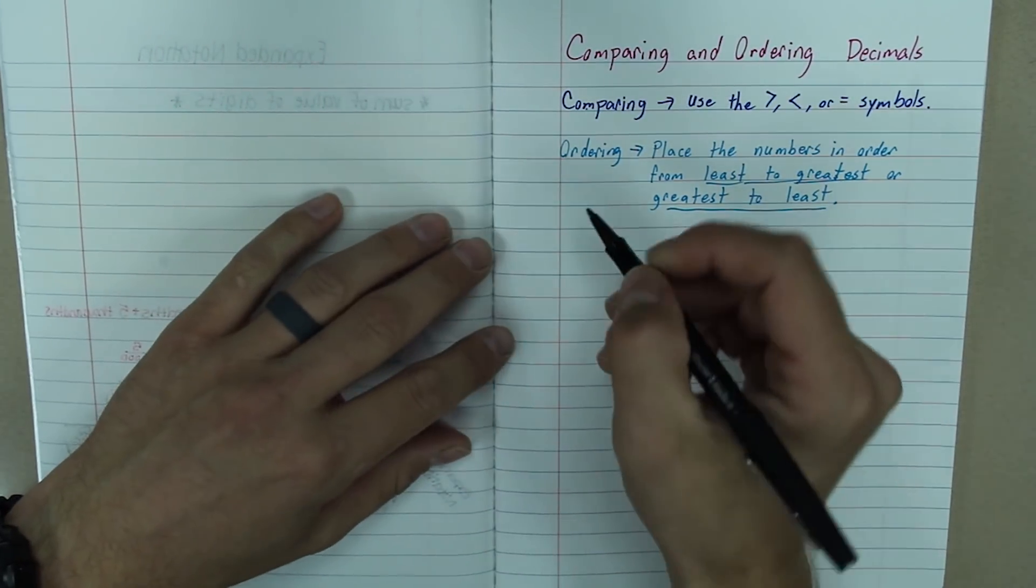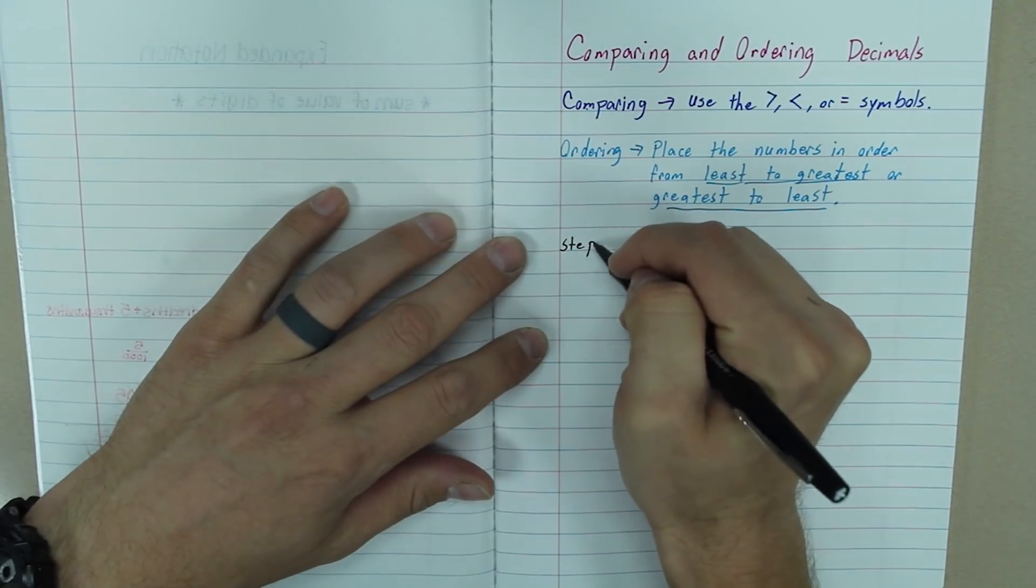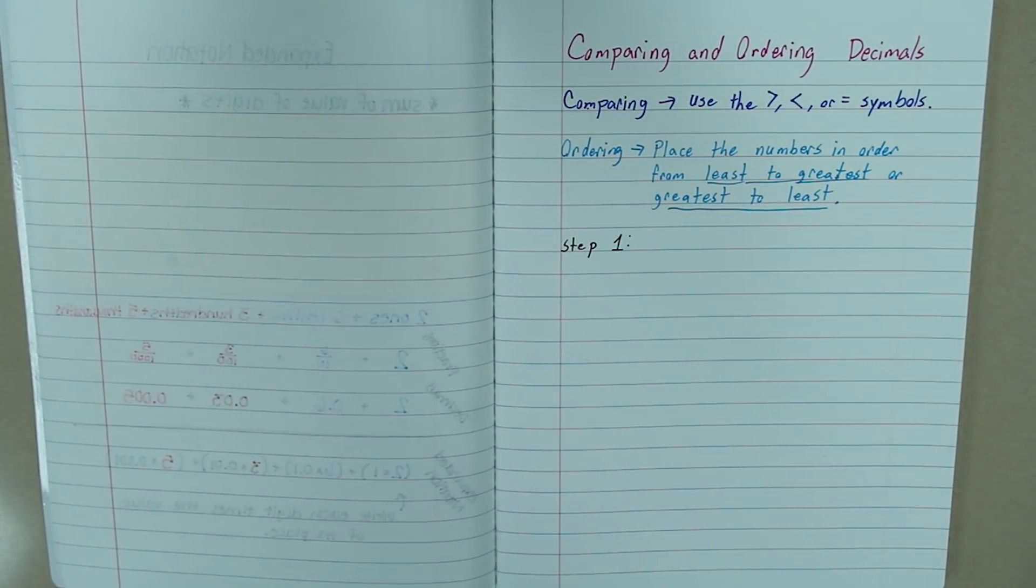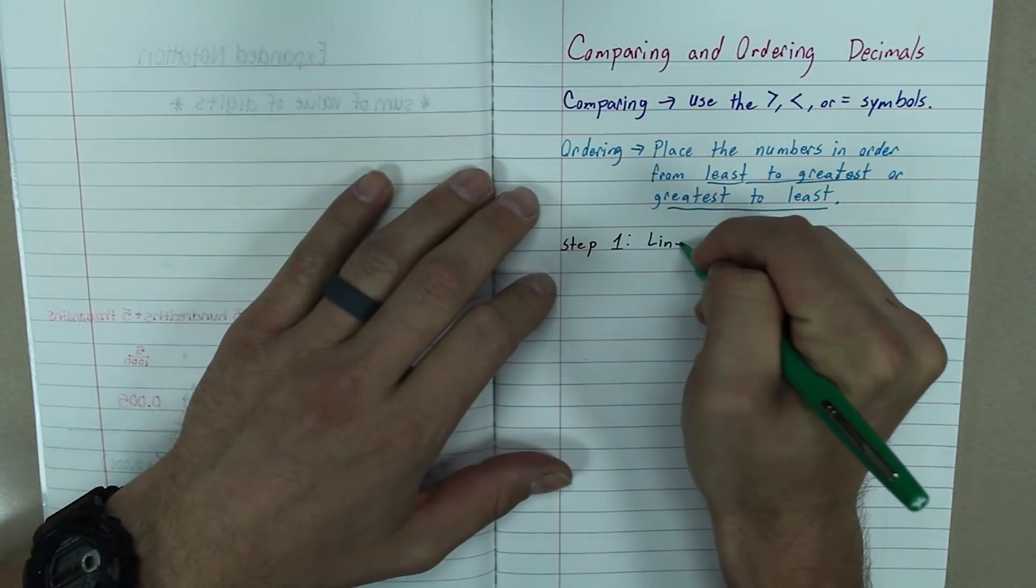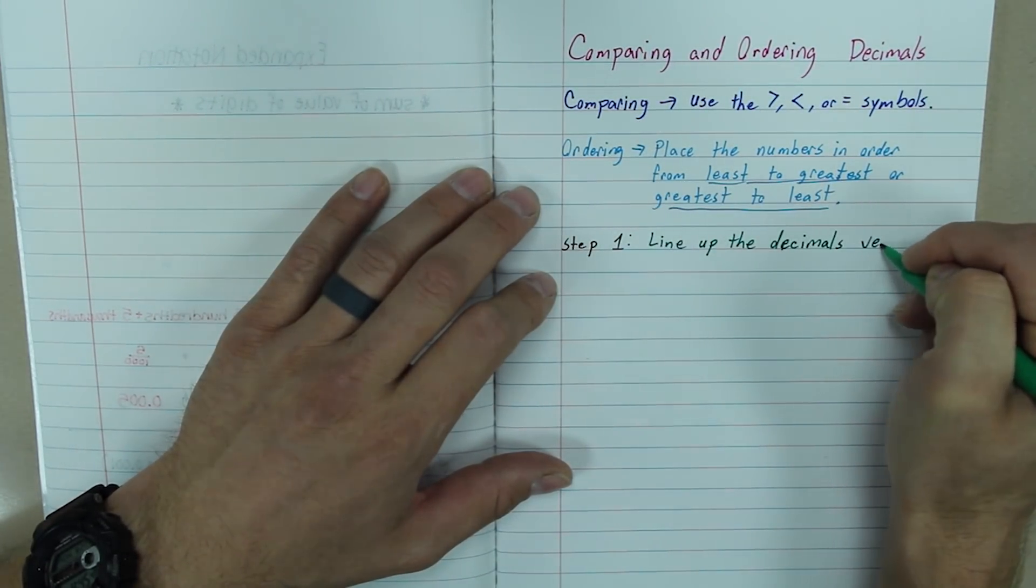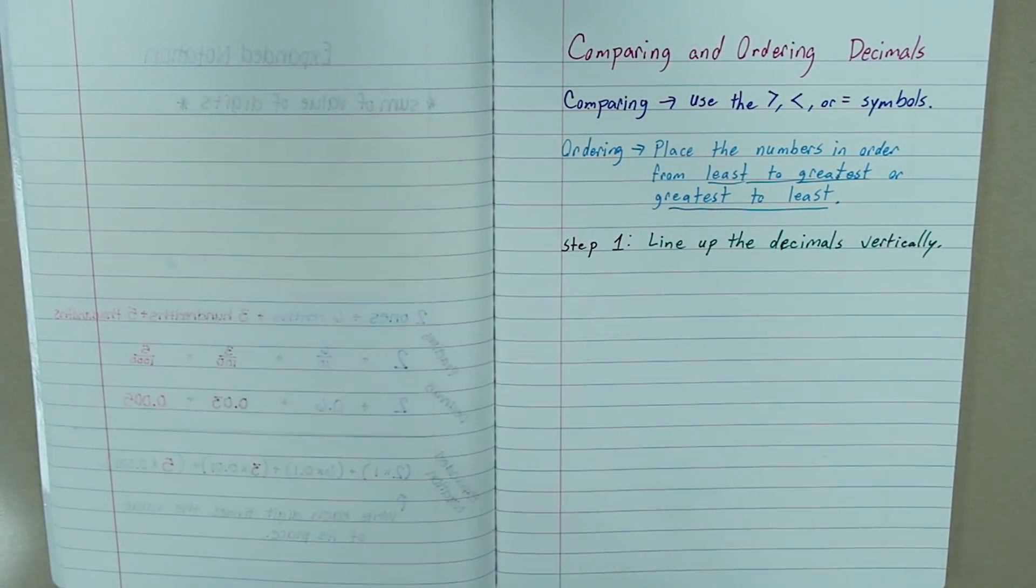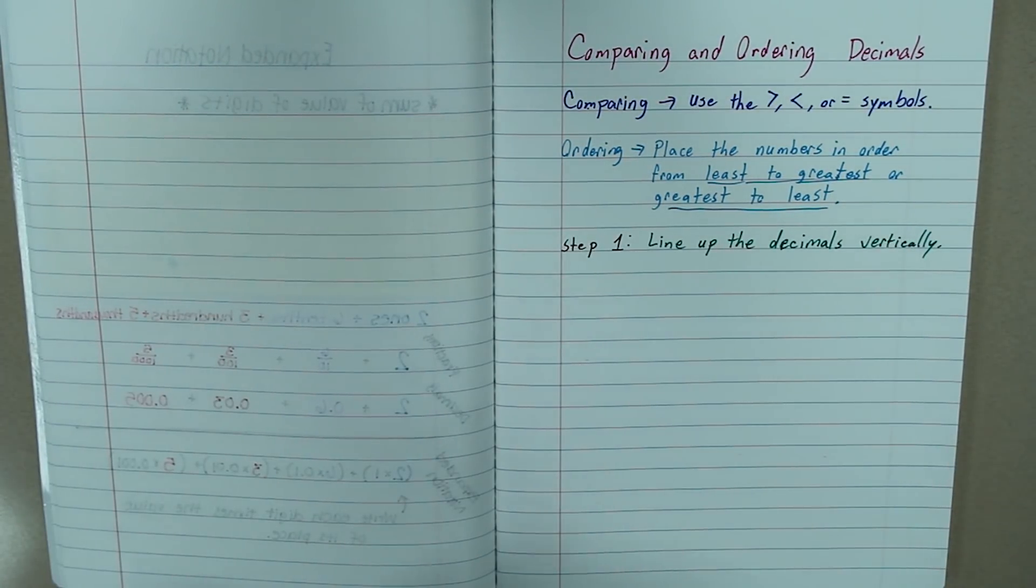So, there are three steps we are going to focus on. Step one, you are going to line up the decimals vertically. And we will show you what that looks like in a minute.